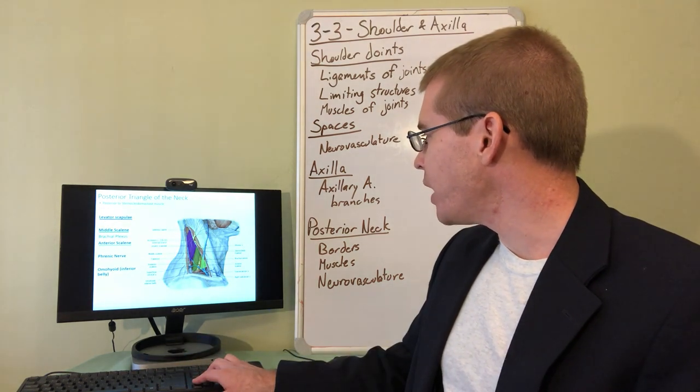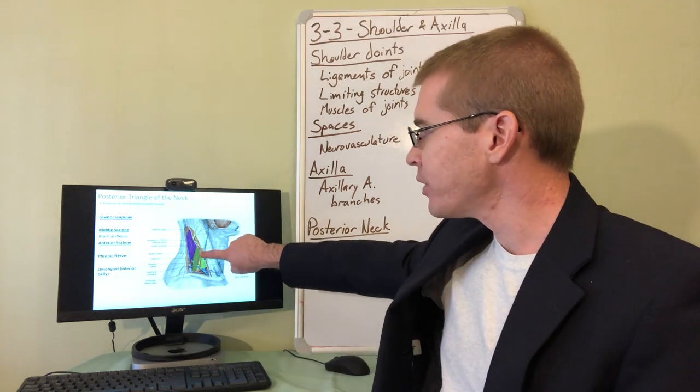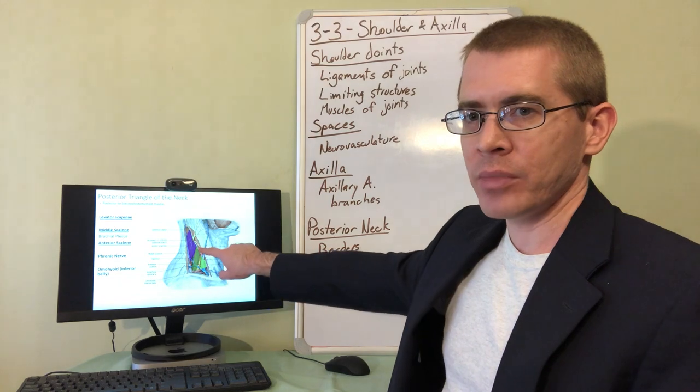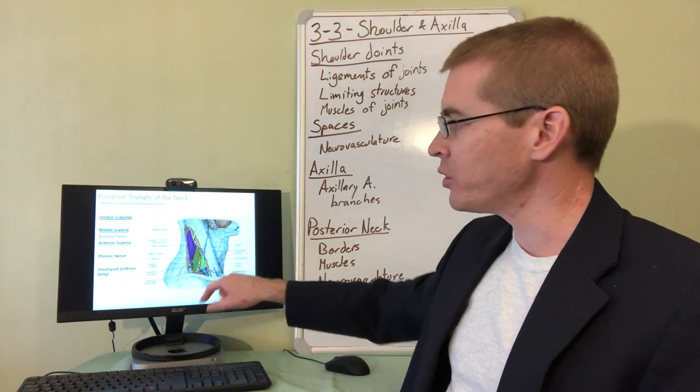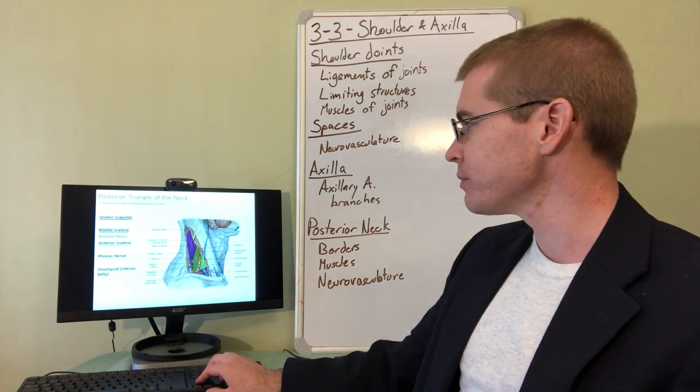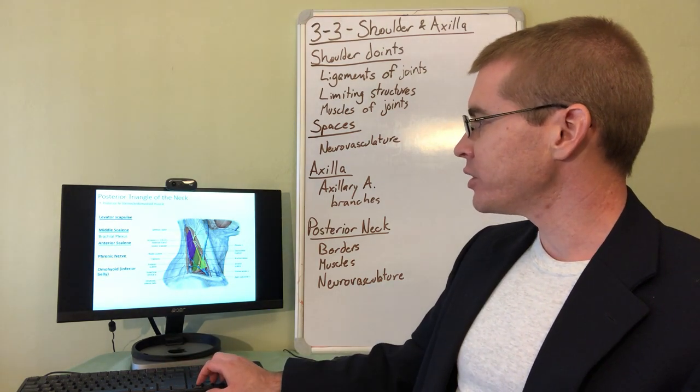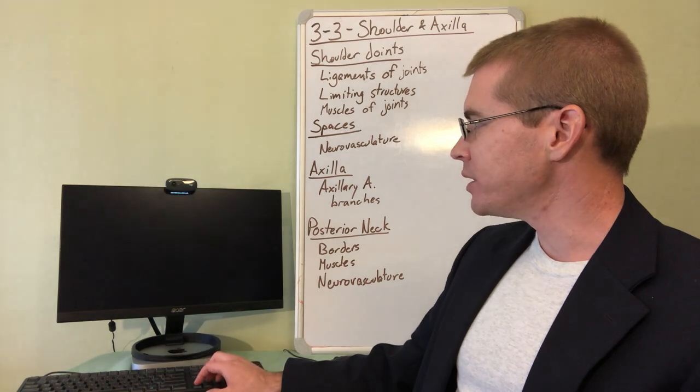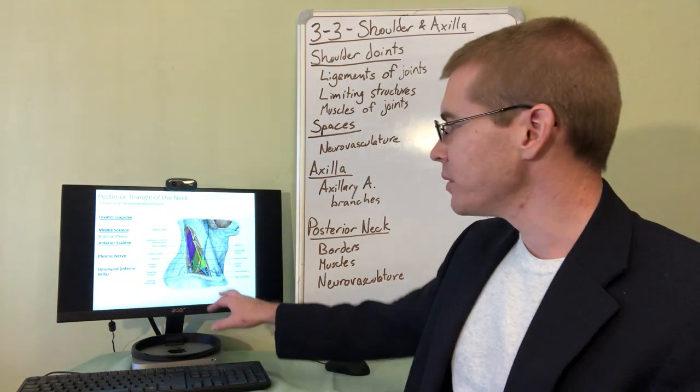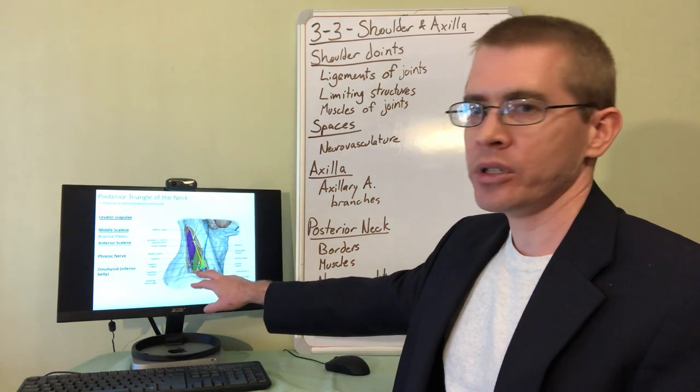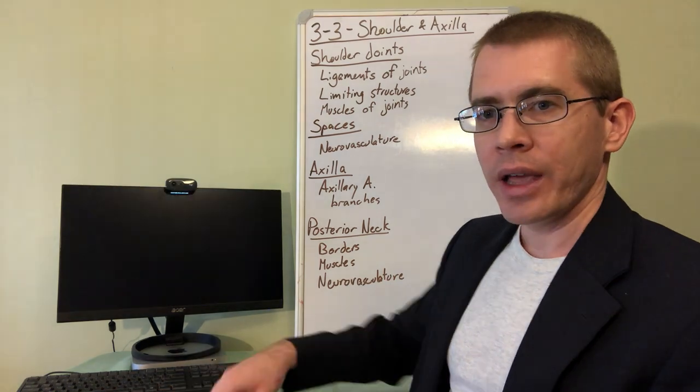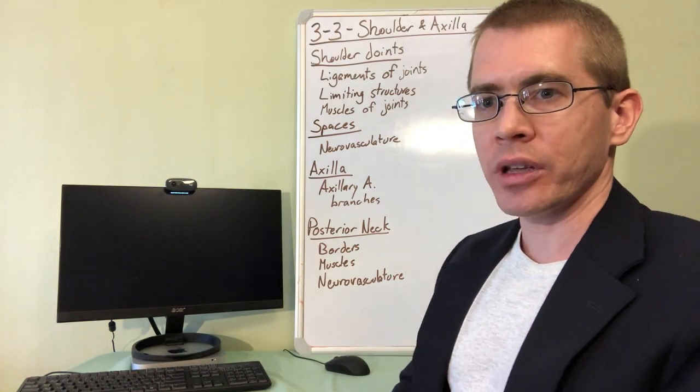We will also be able to find, here it is, phrenic nerve running across the top of the scalene muscles. Phrenic nerve, a very small nerve, so we'll see it quite clearly. It will be a landmark for us when we actually get to the dissections. And then, so I've highlighted it there. It does not come out of Erb's Point, but it's near Erb's Point. And then the inferior belly of omohyoid is going to cross over top of the brachial plexus. And that's it for this lecture. Thank you very much.